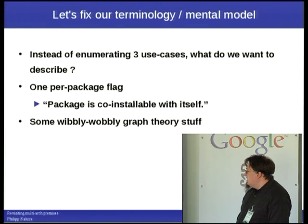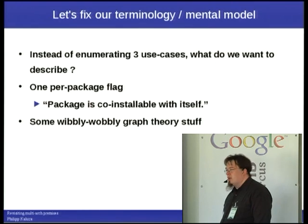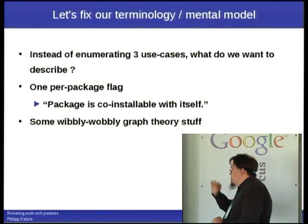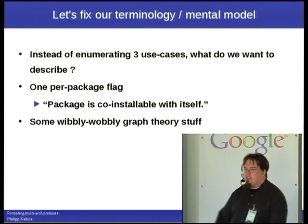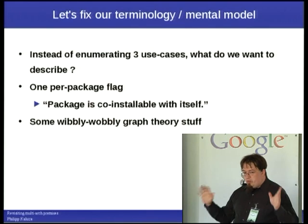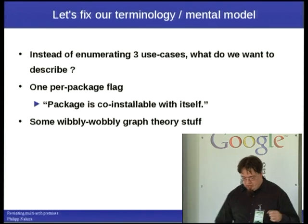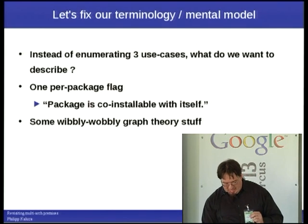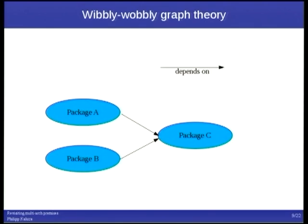Instead of enumerating our three use cases, what are we actually trying to describe? Two things. One is a per-package flag: the maintainer has reviewed this package and declared that it should be co-installable — so dpkg will even attempt to do that. That's one piece of information we want to know about each package. Then we have a bit more graph theory, which I'll get to in a second. Graph theory as we need it is pretty simple: we have packages, called nodes in graph theory, and we have a depends-on relationship.